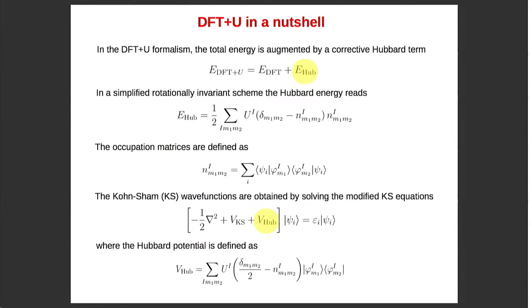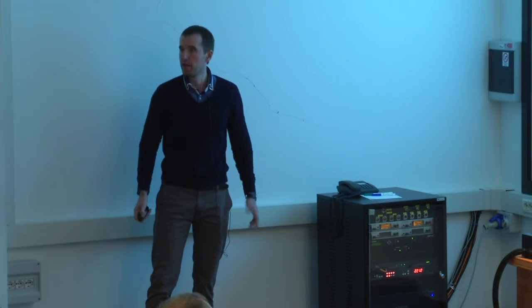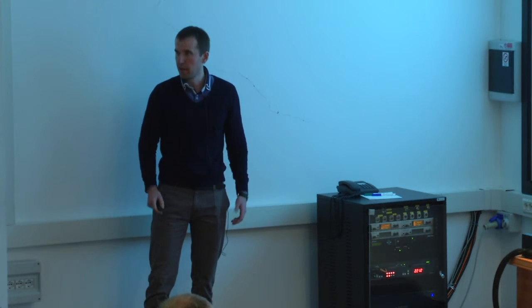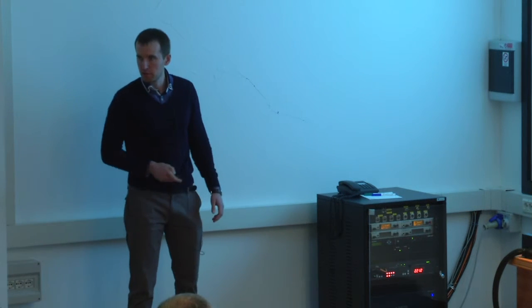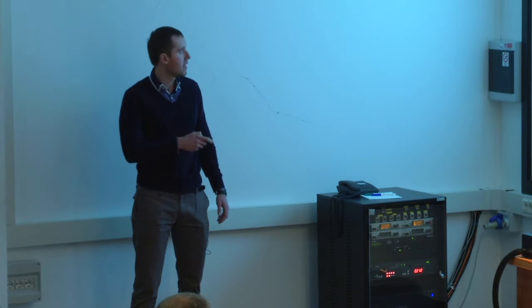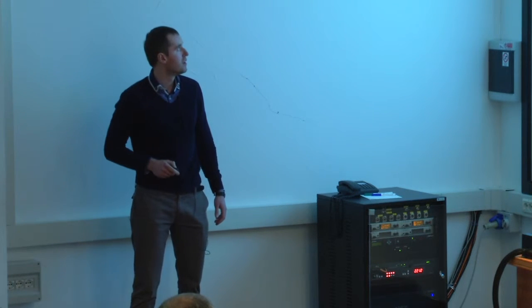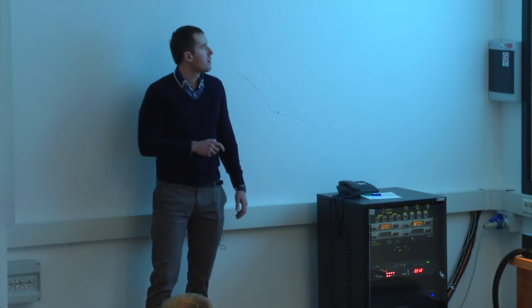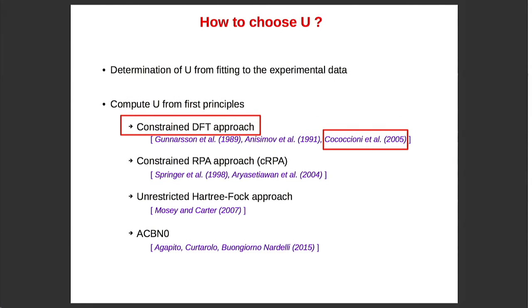So, in order to perform DFT+U calculation, we have to know the value of the U parameter. And this is actually the goal of my talk, to discuss how to determine the U parameter. Sometimes people fit their data to experimental data, and in this way they obtain the U parameter. But we can also try to compute it from first principles, and there are several methods to do it.